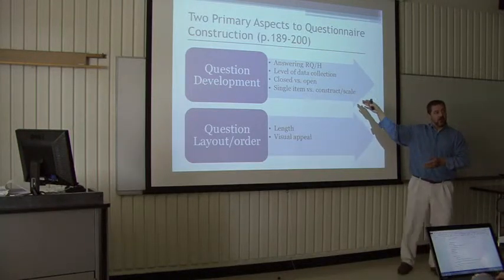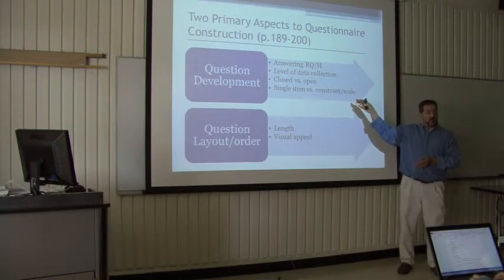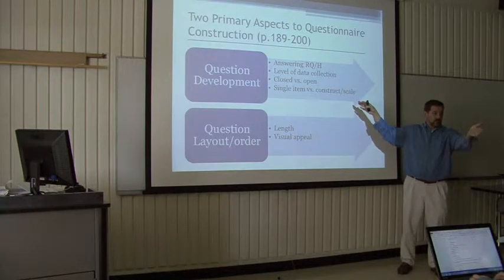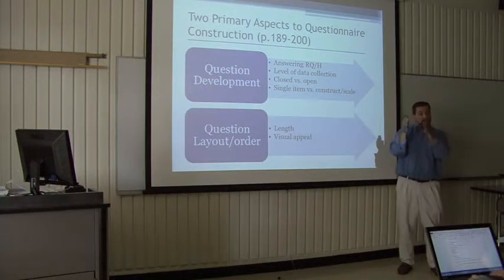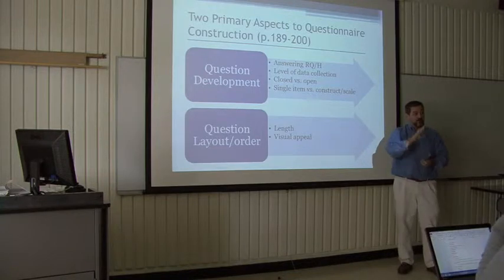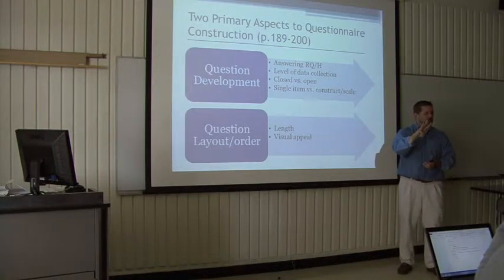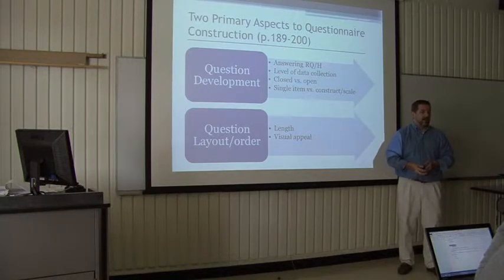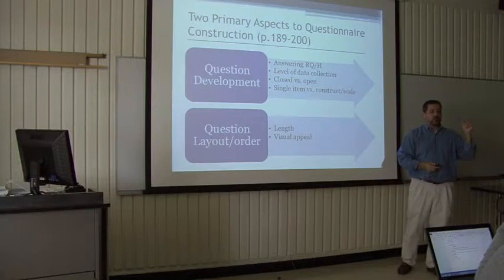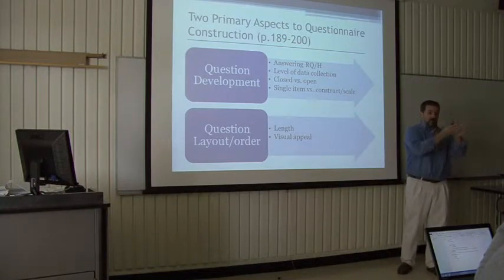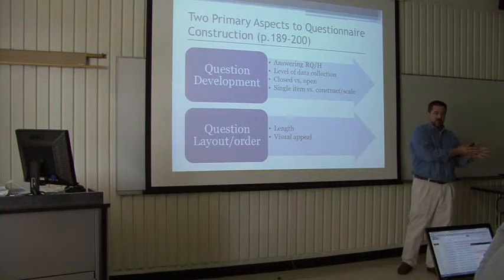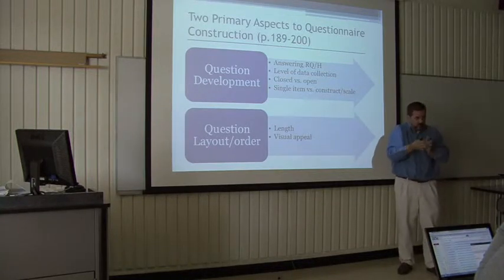Constructs or scales is where you're trying to find out — for example, with the communication apprehension scale — there's a range. If you're in this range, you are high apprehension; if you're in this range, medium apprehension; if you're in this range, low apprehension. So it sounds like three levels, but you've got 24 questions on that scale. And questions 1, 2, 7, 9, 11, and so on — if you have a high score there, that's going to put you in this range.